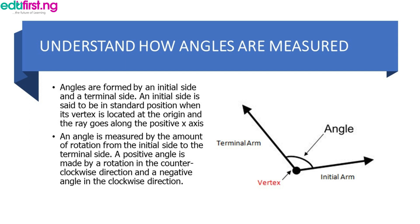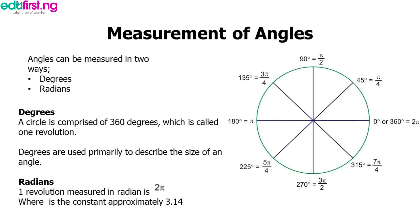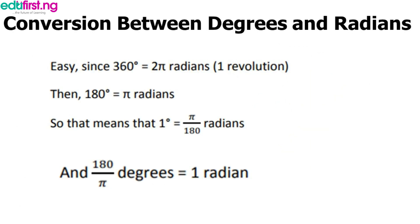Angles can be measured in two ways: in degrees and radians. Generally, angles are measured in degrees — that is the most common. Angles can also be measured in radians, and there is a relationship between degrees and radians; we can convert from one to the other. A circle is comprised of 360 degrees, which is called a revolution.